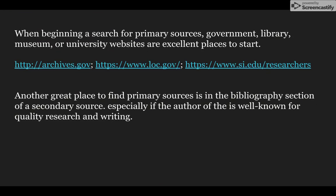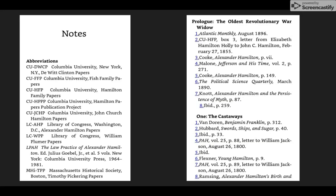When beginning a search for primary sources, government, library, museum, or university websites are excellent places to start, as sources from those entities are often more reputable than those on a commercial or personal website. Another great place to find primary sources is in the bibliography section of a secondary source, especially if the author is well known for quality research and writing.